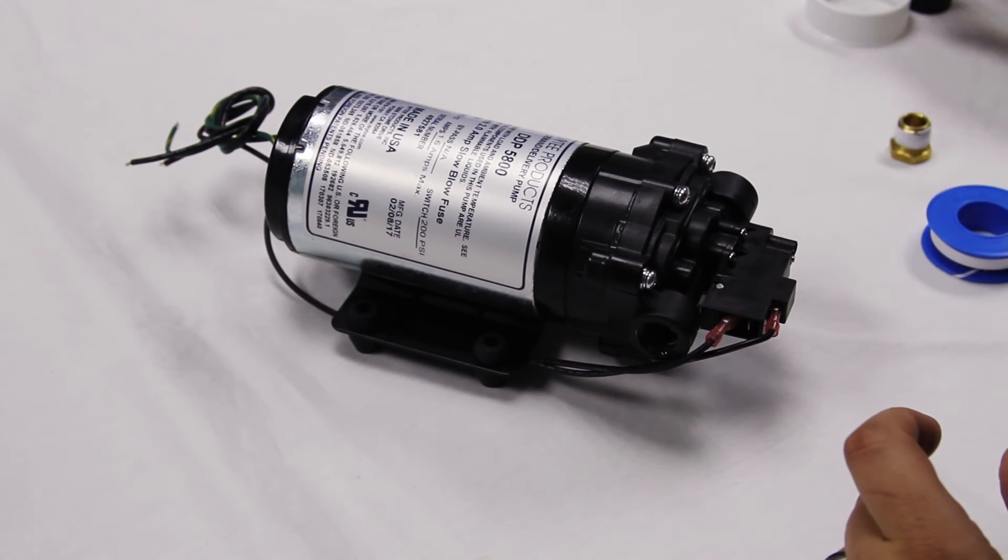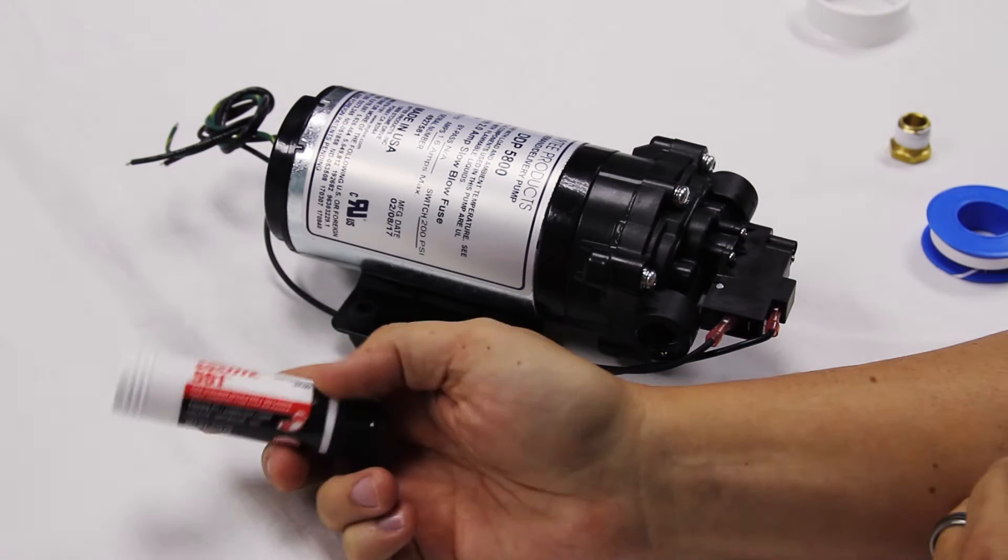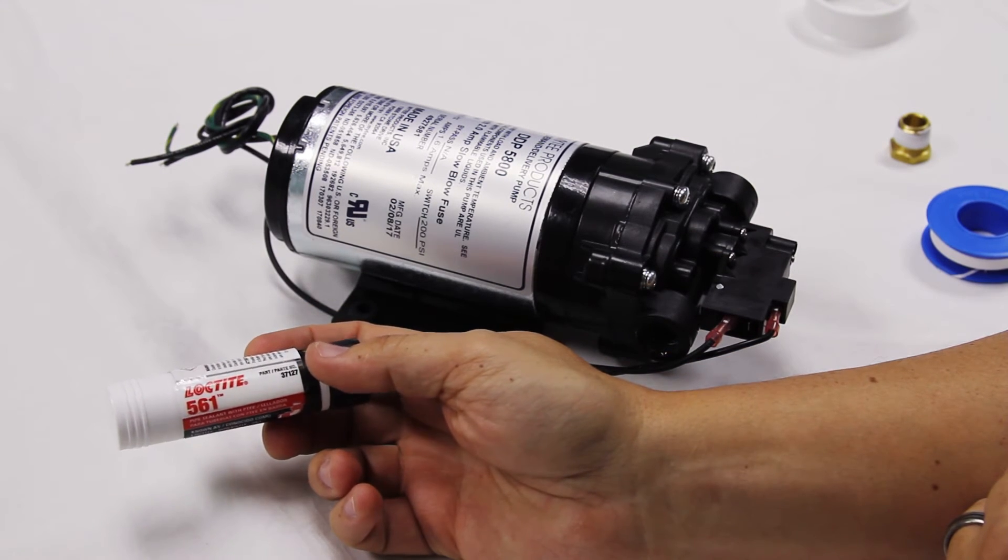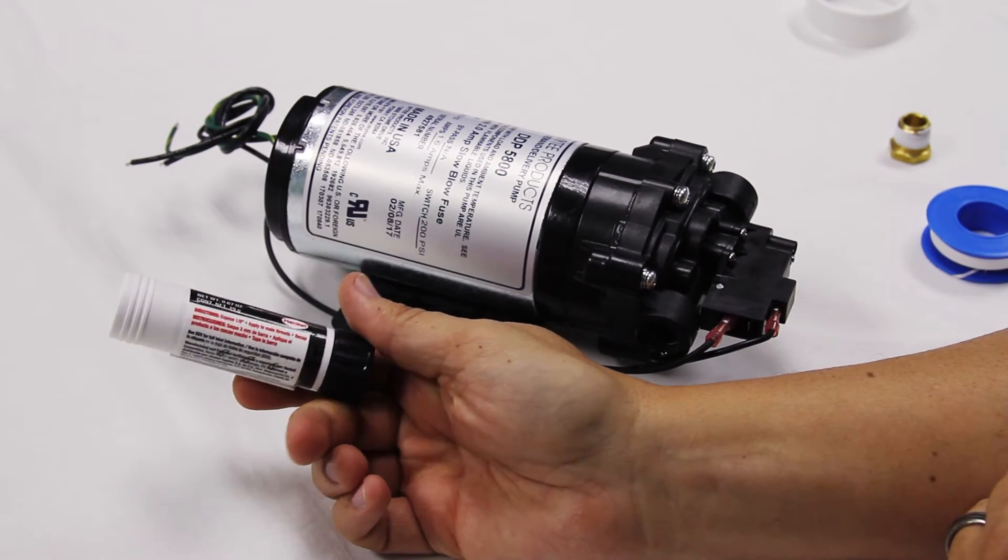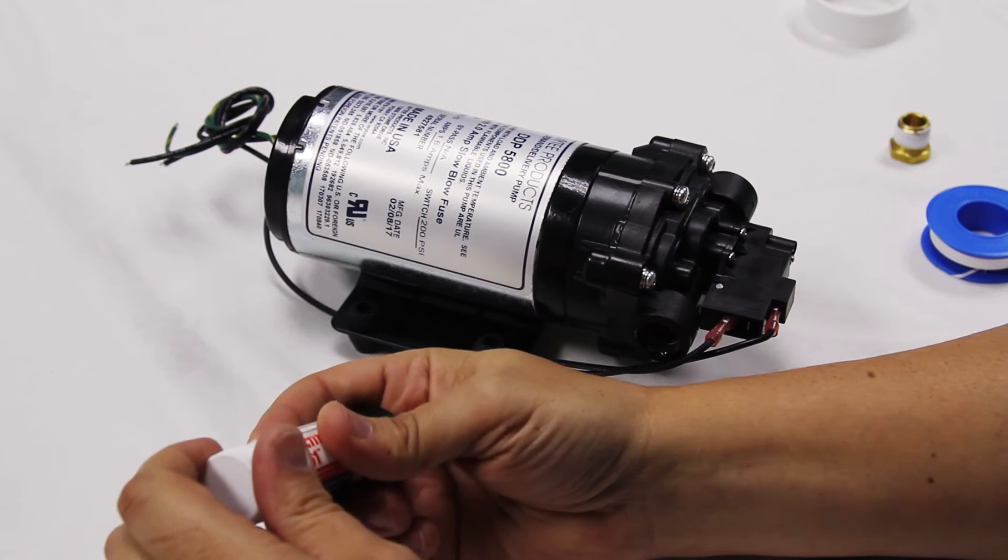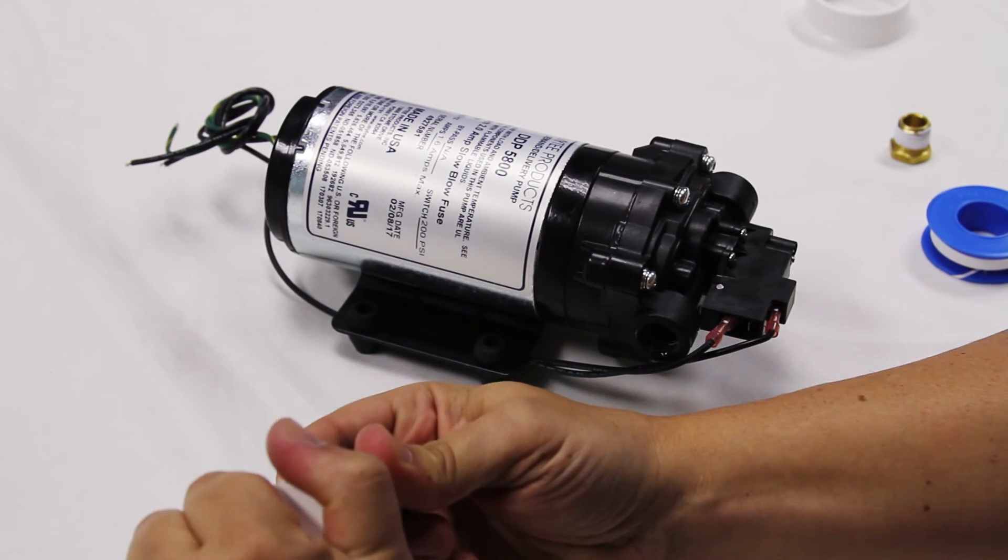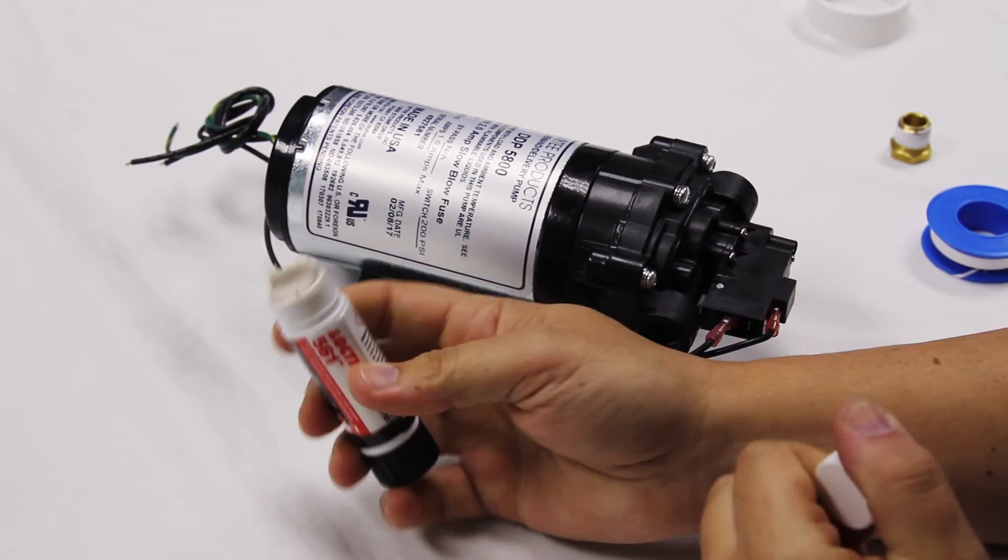So what we recommend is using some sort of paste like Loctite 561. This is what we use on all of our fittings, works really great. Basically it's almost like chapstick - you just dab a little bit into the threads and thread your brass right on.